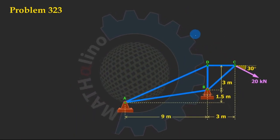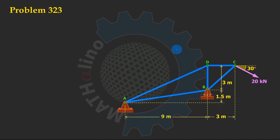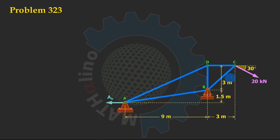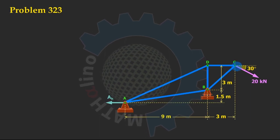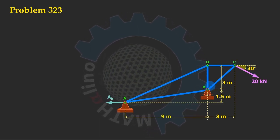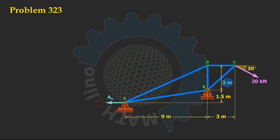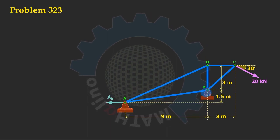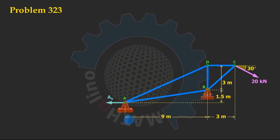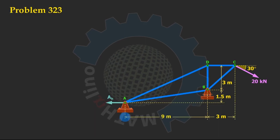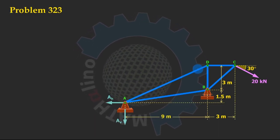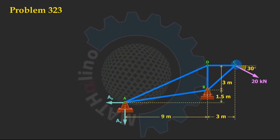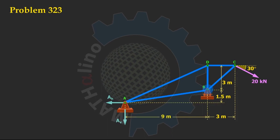Let us begin with the directions of our reaction forces. At A, the horizontal reaction must be to the left — it will resist the horizontal component of this 20 kilonewton force, which is to the right. Because of this force, the tendency of this structure will rotate clockwise about point B. That is why the vertical reaction at A must be downward to prevent that rotation.